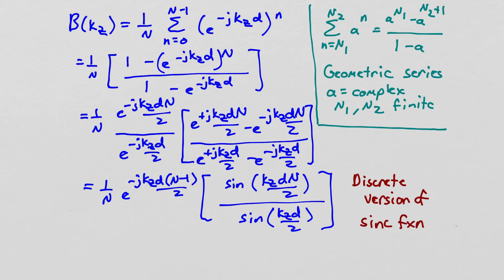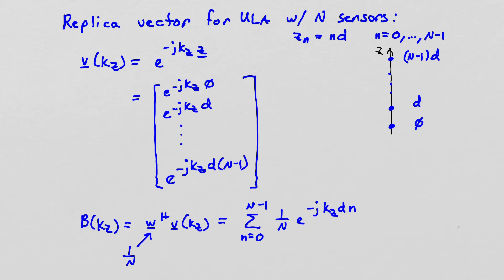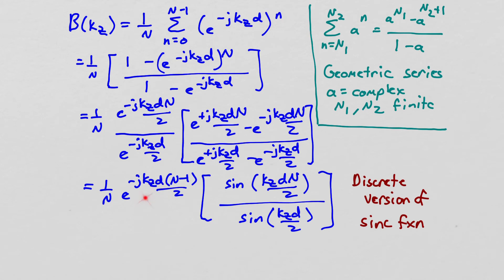It has some useful properties that we can apply to get an easy plot of the magnitude. This exponential won't affect the magnitude at all, it affects the phase. This is just a normalization factor. This phase factor is a consequence of where I assumed my first sensor was. I assumed my first sensor was at zero. If I'd assumed my first sensor was somewhere else, I would get a different phase factor here.